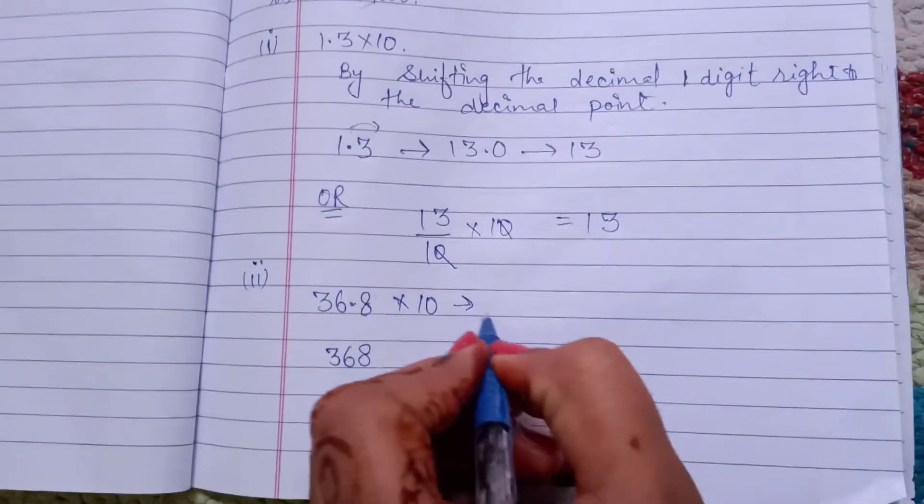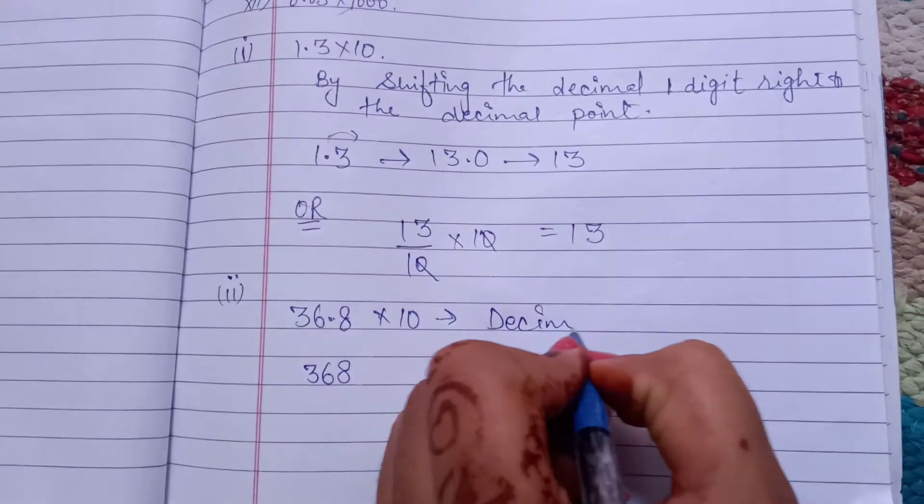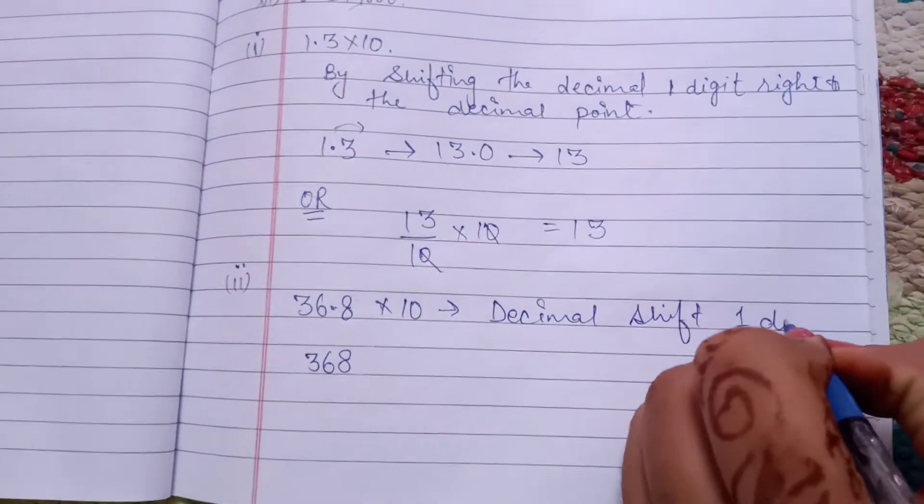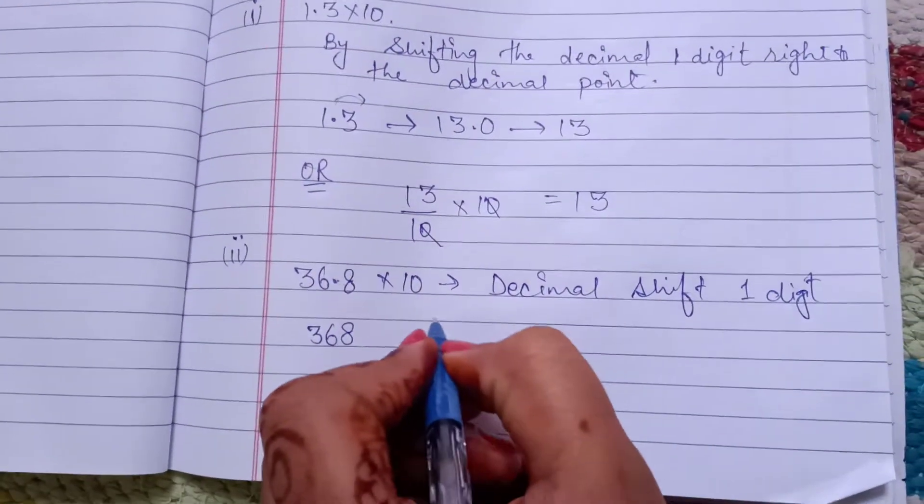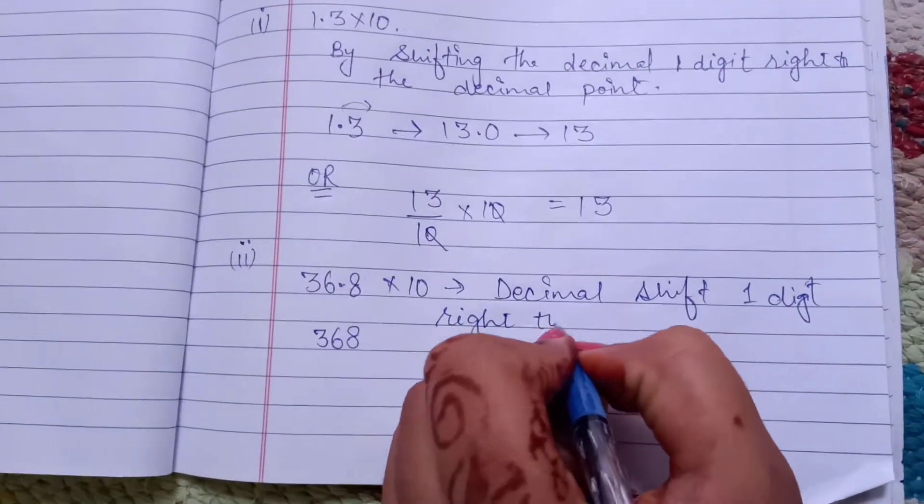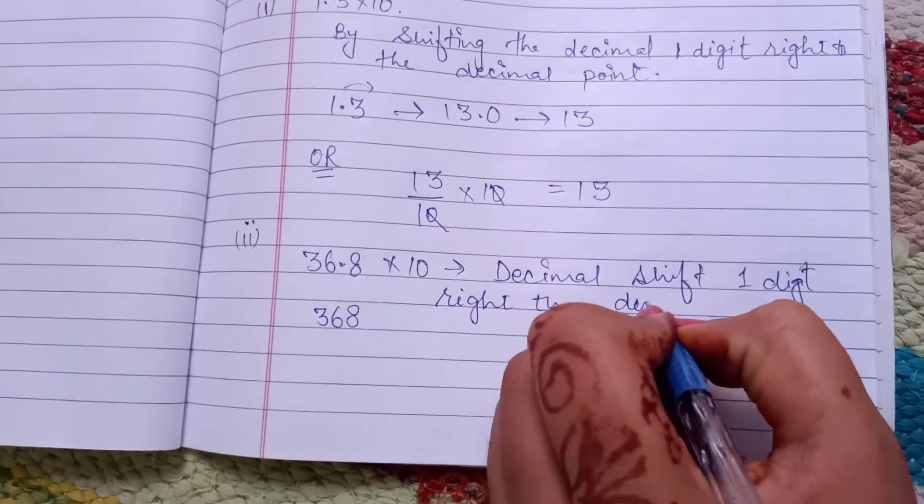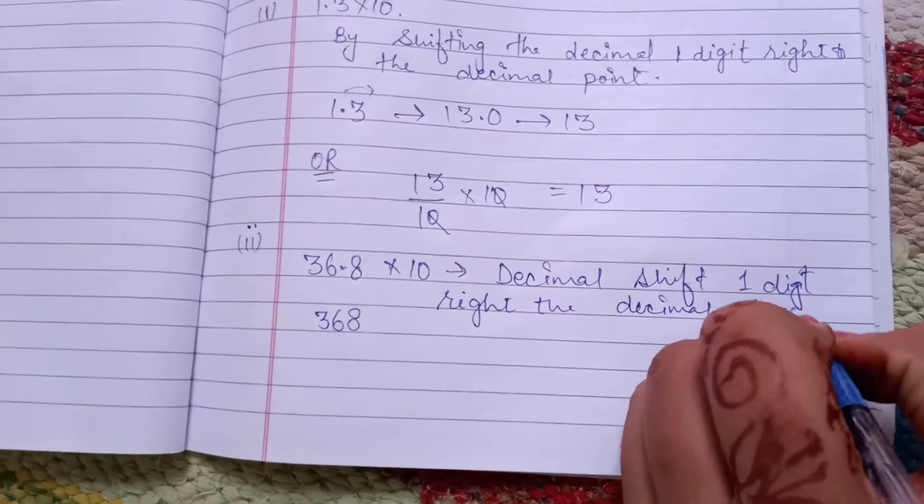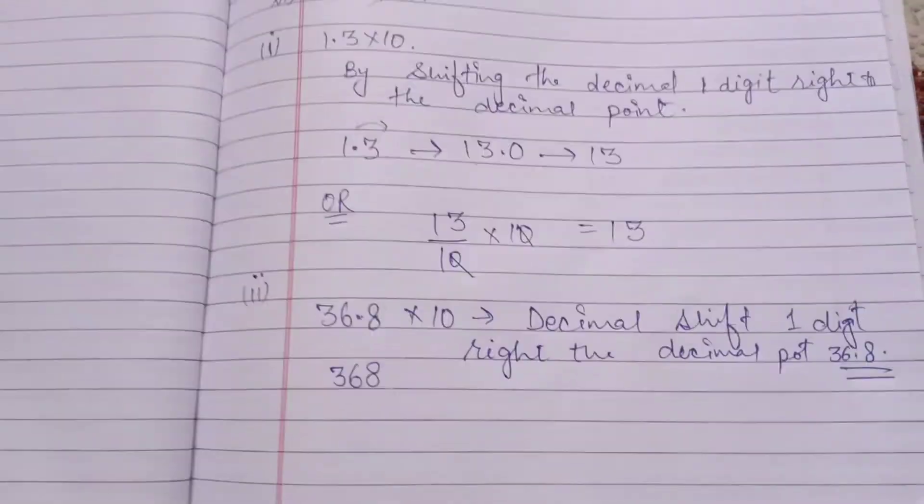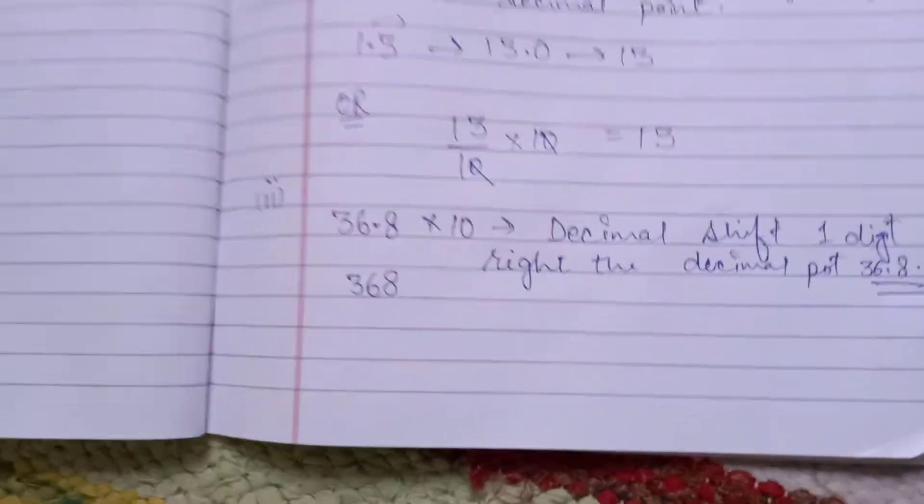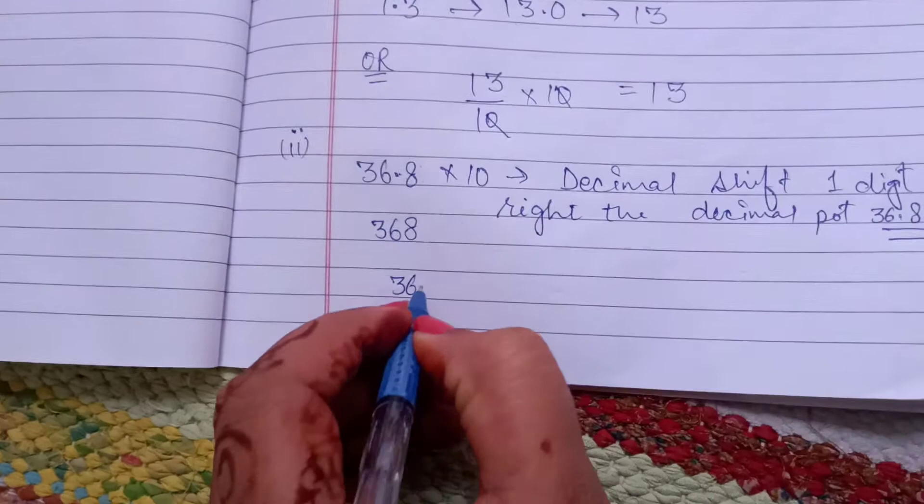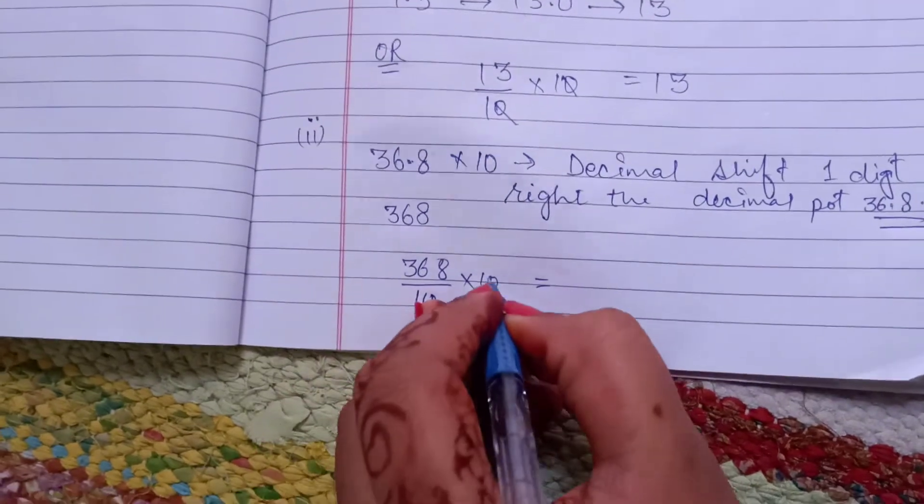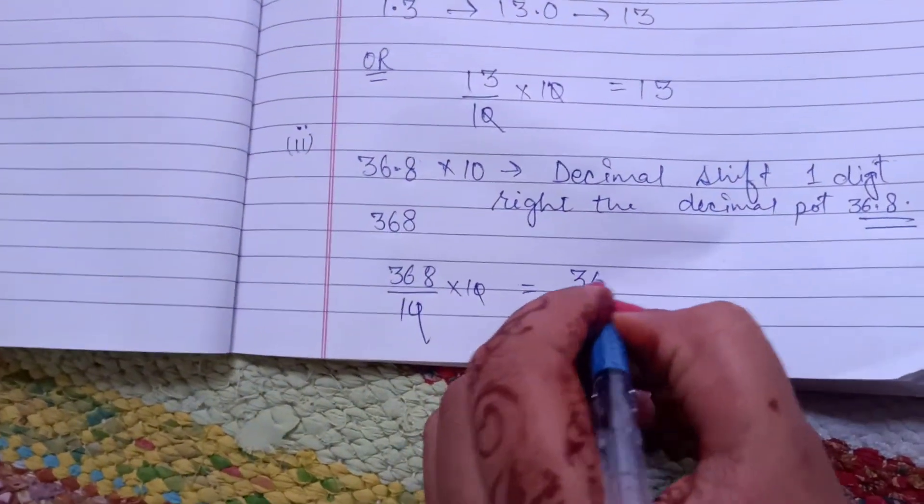Means here we can write decimal shifted one digit right to the decimal point, that is 368. We get 368, or you solve by removing the decimal: 368 over 10, then multiply by 10, and this cancel. Your answer is 368.